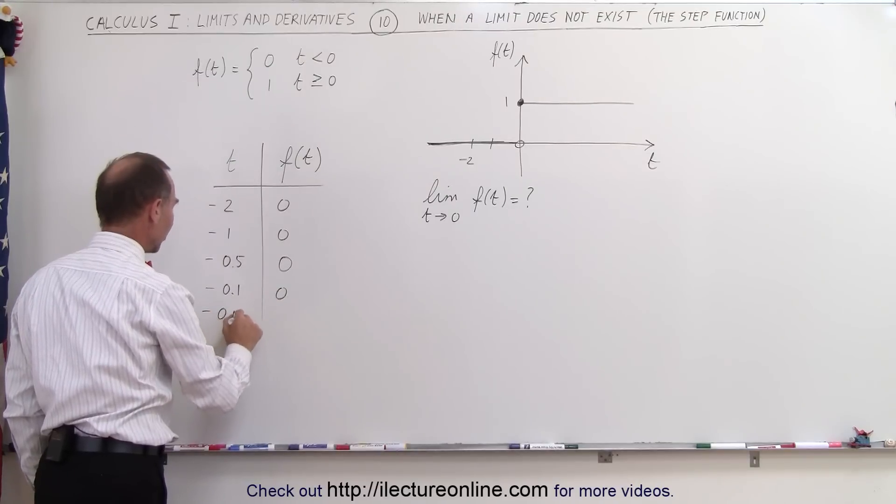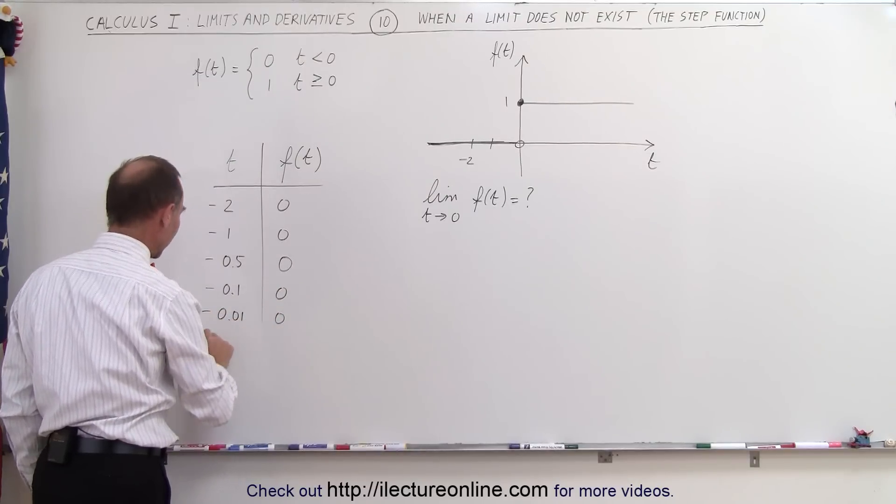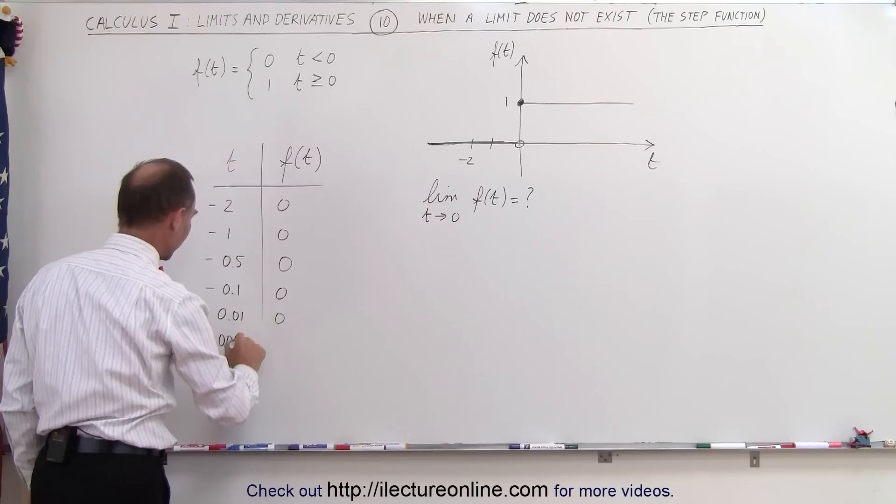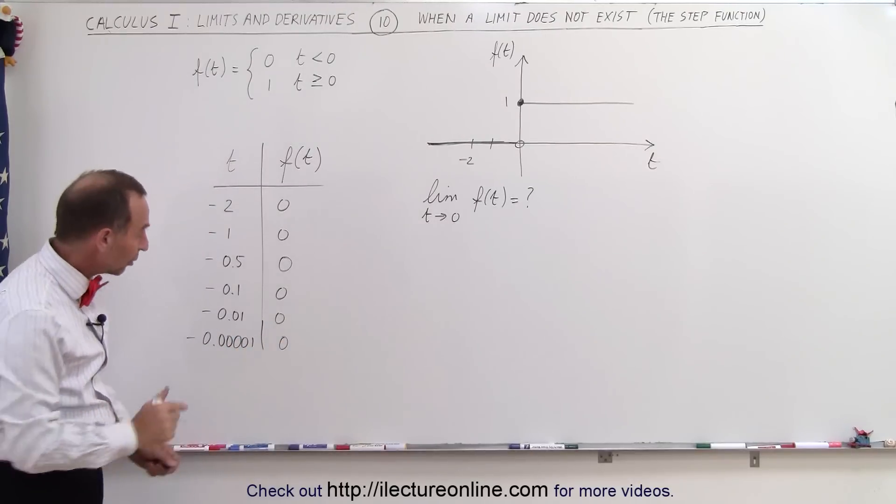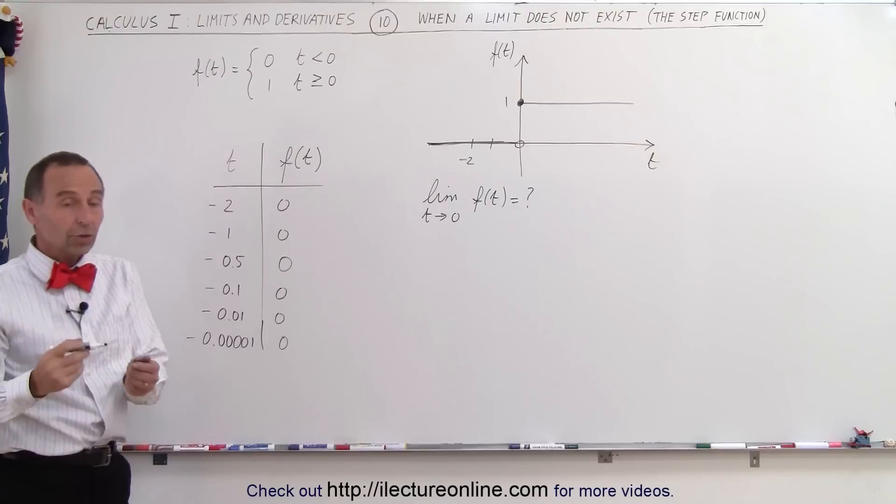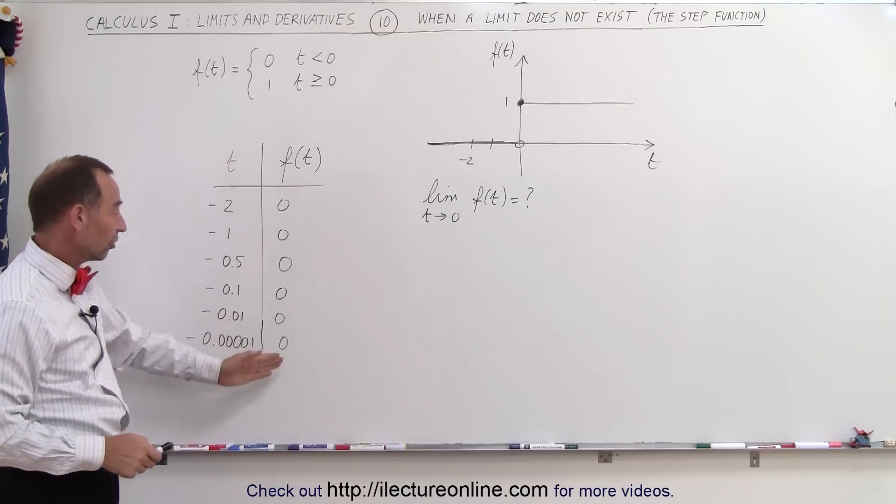Negative 0.01? Still 0. Negative 0.001? It's still equal to 0. So as we get closer and closer to 0, the conclusion would be that the function equals 0.